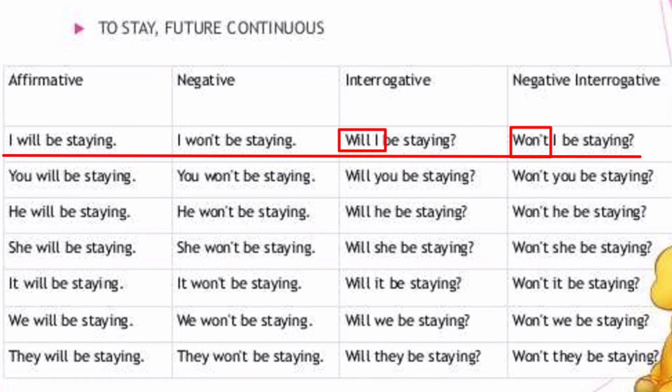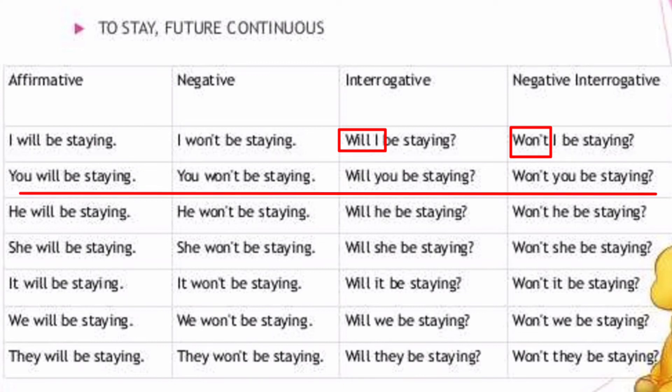One more example with 'you': You will be staying. You won't be staying. Will you be staying? Won't you be staying?